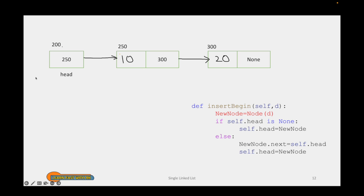In this example we have one linked list with two nodes. The first node resides at address 250, the second node resides at address 300 and is also the last node. To differentiate the last node from others, the last node's next does not contain any value. It need not always be None — it depends on the programming language used to implement the linked list. In this tutorial, I am covering Python implementation, so I use the notation None, since None in Python represents the null value.